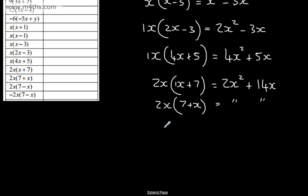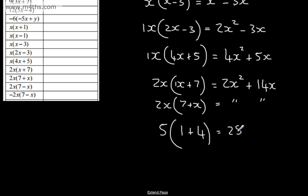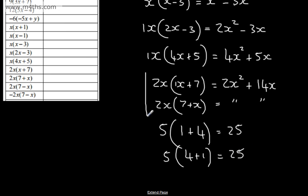If we think about this — if we were doing our rectangle from before and we had 5, and then we had another side length of 1 plus 4, well, we know that's going to give us 5 times by 5, which is 25. If we had 5 and then 4 plus 1, it's going to be exactly the same — 5 times by 5, which is 25. So these two are the same — it's just the way round in the brackets these are written.